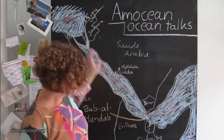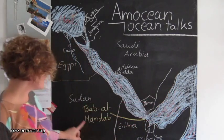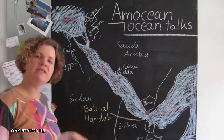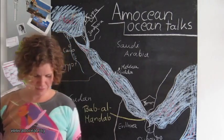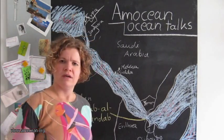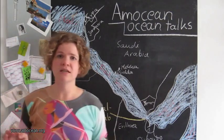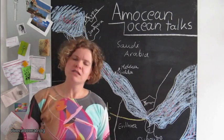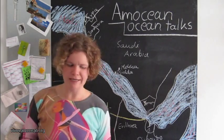Here, where the Red Sea is connected to the Gulf of Aden, we have the Strait of Bab Al-Mandab, which means, translated, the Gate of Grief. How did the Red Sea get its name? It is named Red Sea in basically every language that has a name for that sea, but where the name comes from is not quite clear.